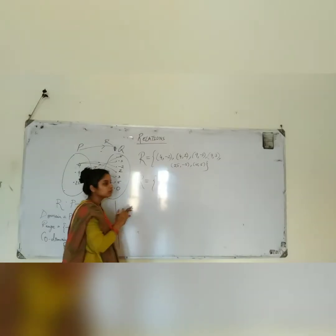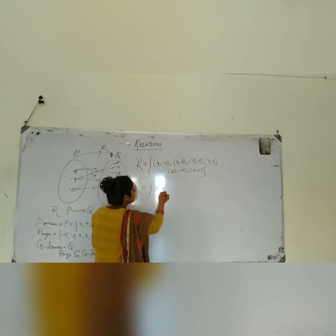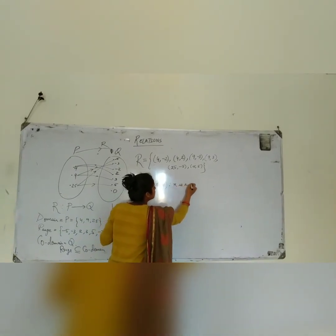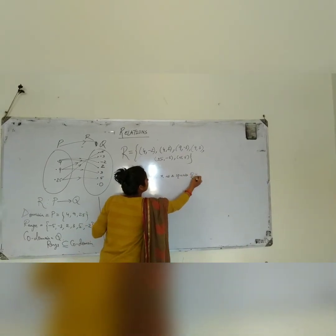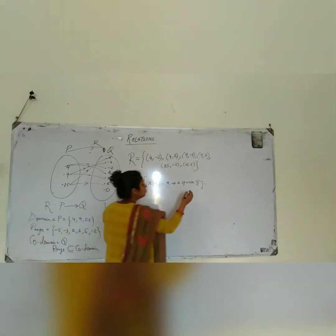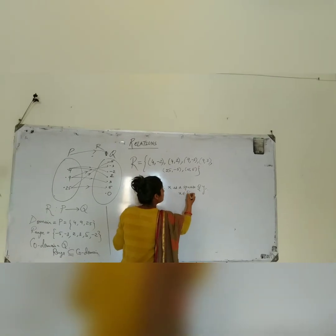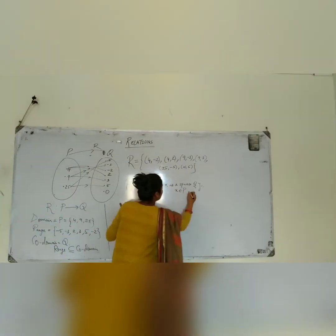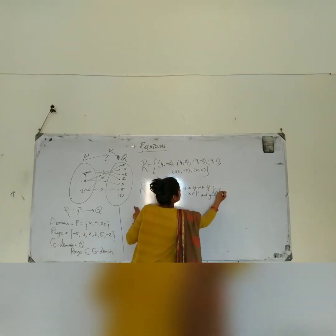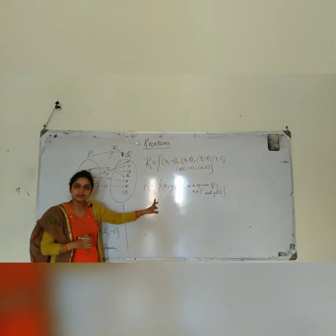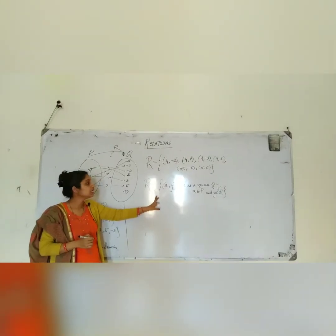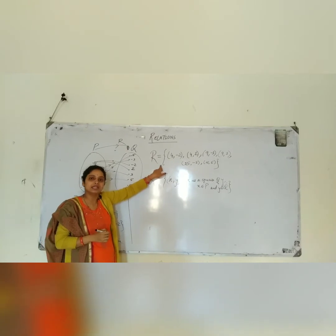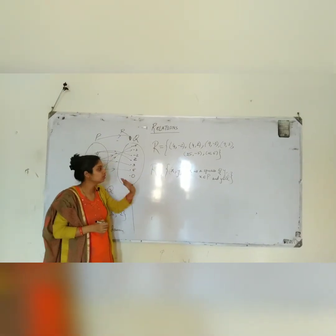We can also write it in set-builder form. How? It is the set of (X, Y) such that X is the square of Y, where X belongs to set P and Y belongs to set Q. So this is the representation of the relation in set-builder form.